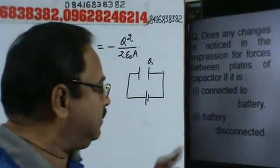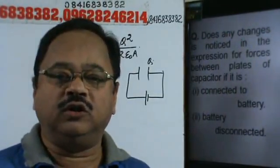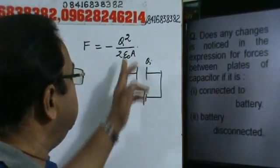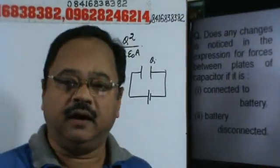When the battery is disconnected, then all the time the charge will be constant, Q will be constant, and the distance will be no term. Therefore, it will remain unchanged.